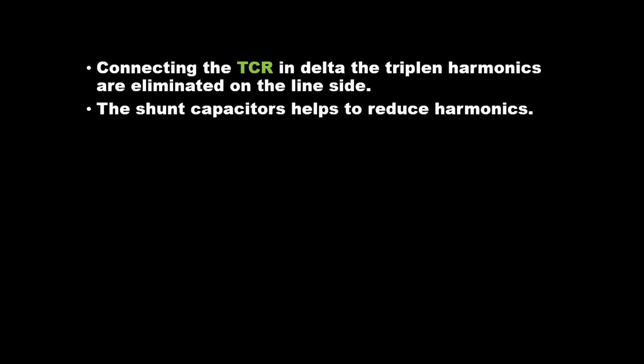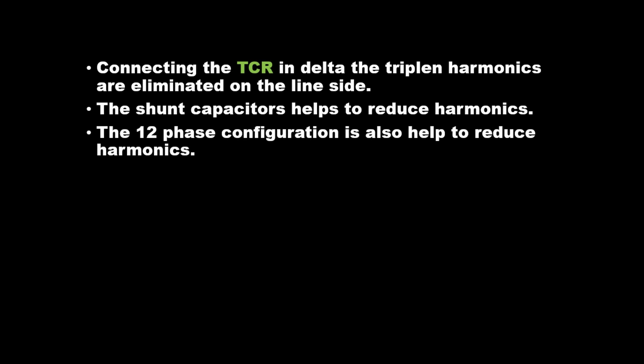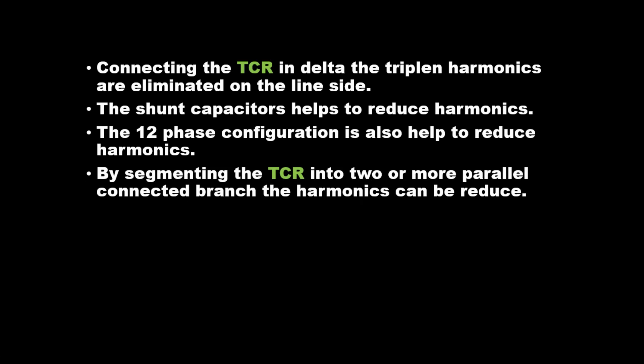Connecting the TCR in delta, the tripline harmonics are eliminated on the line side. The shunt capacitors help to reduce harmonics. The 12-phase configuration also helps to reduce harmonics. By segmenting the TCR into two or more parallel connected branches, the harmonics can be reduced.